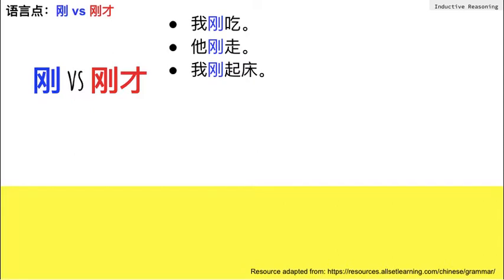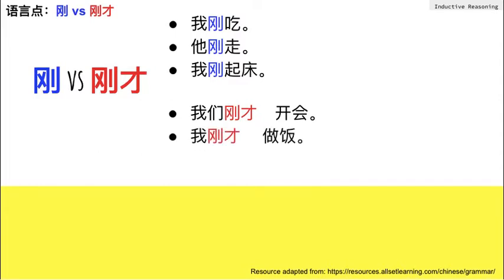Examples of using 刚才: 我们刚才开会 — We were having a meeting just now. 我刚才做饭 — I was cooking just now. 我刚才想说 — I wanted to talk just now.